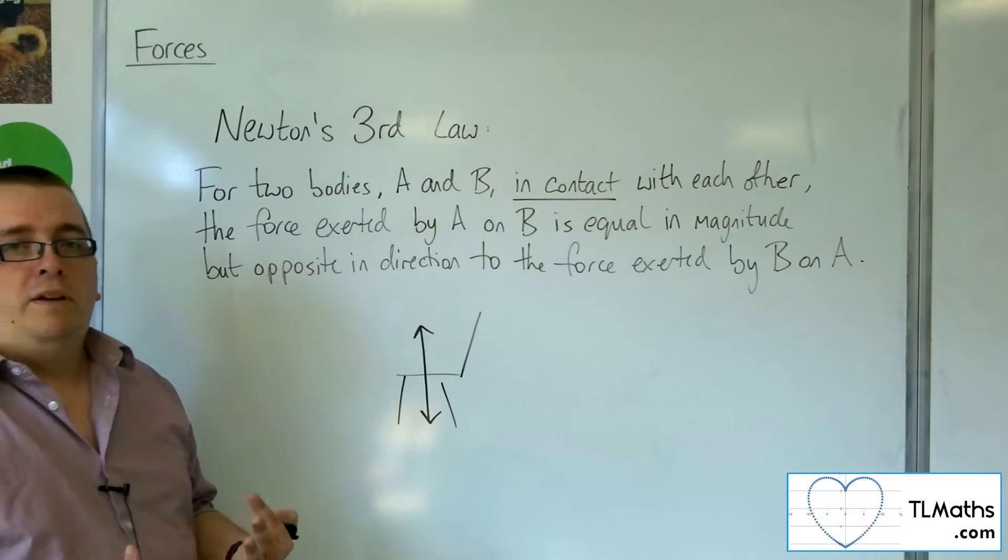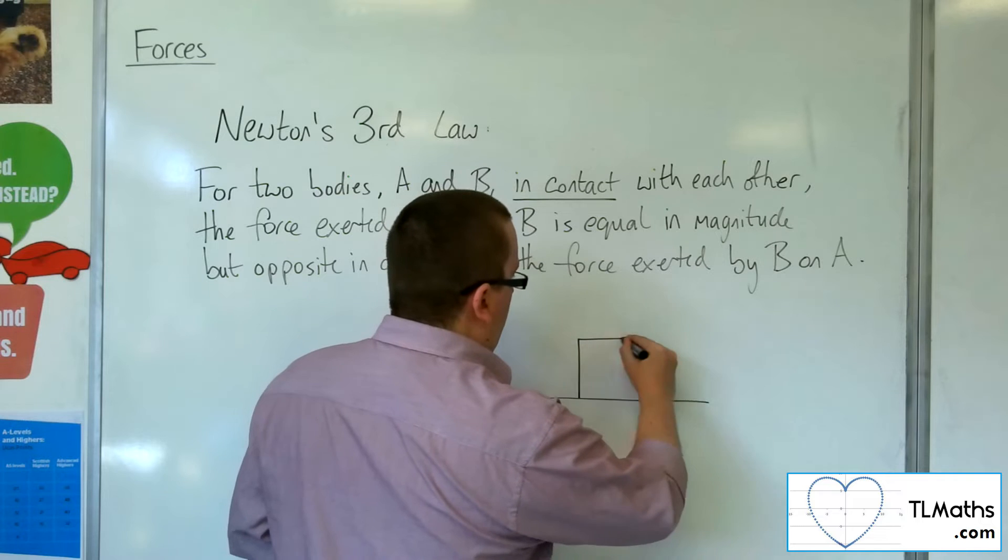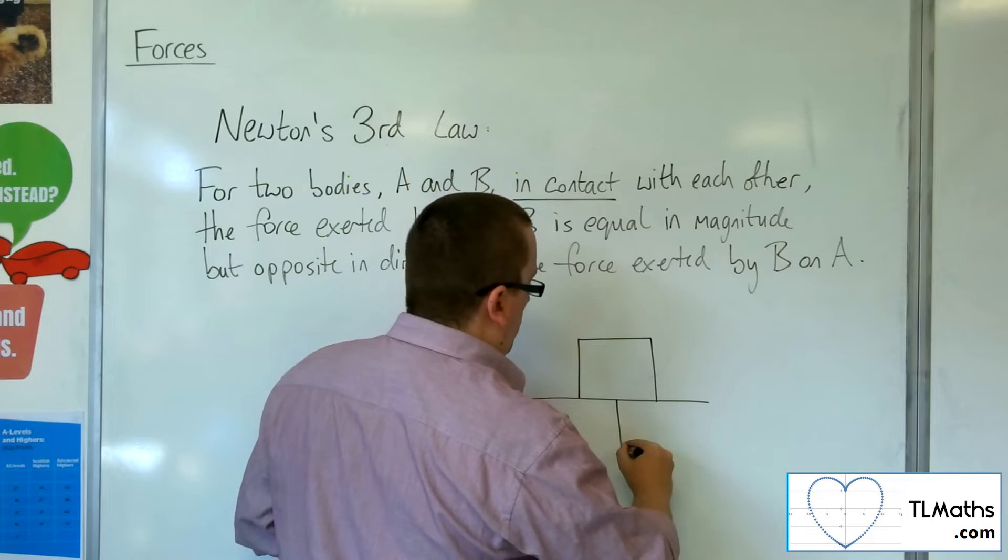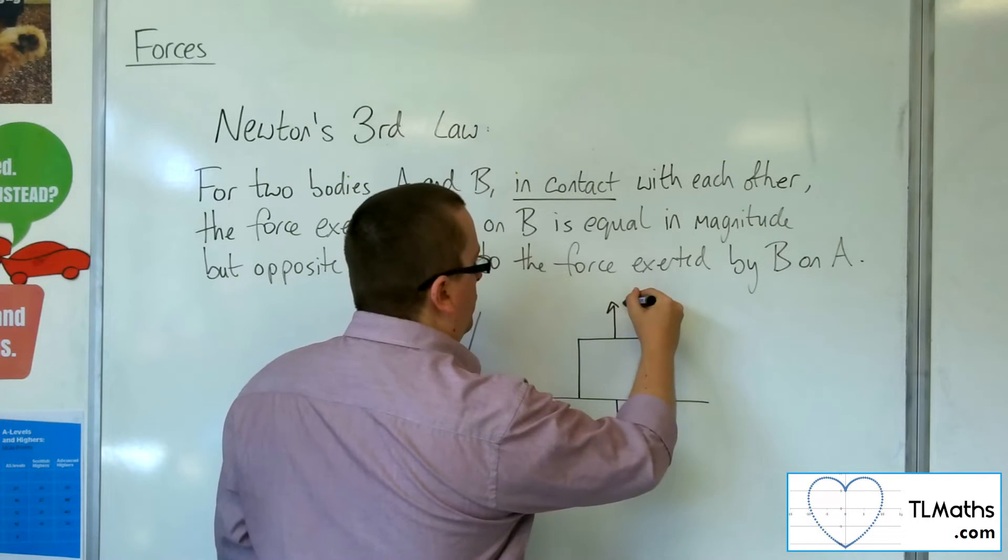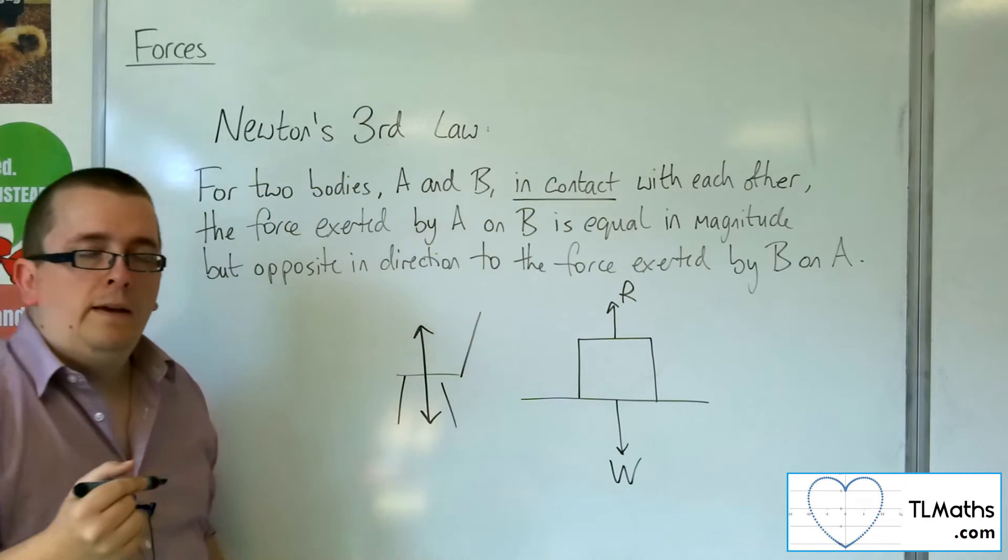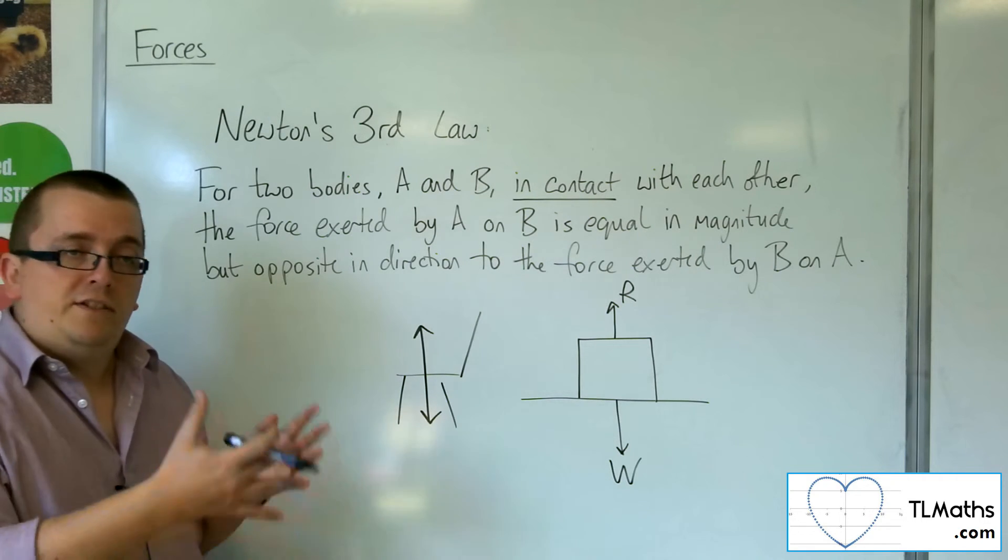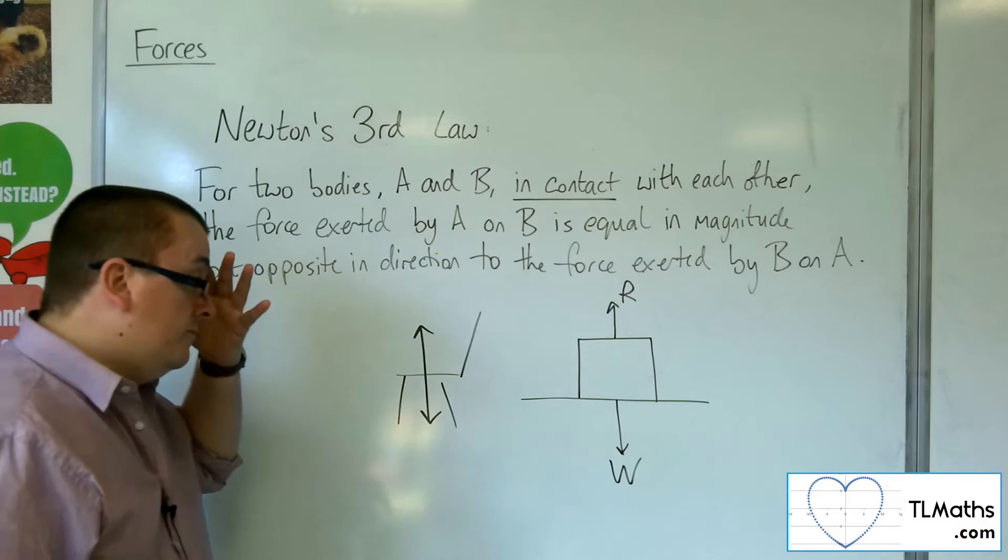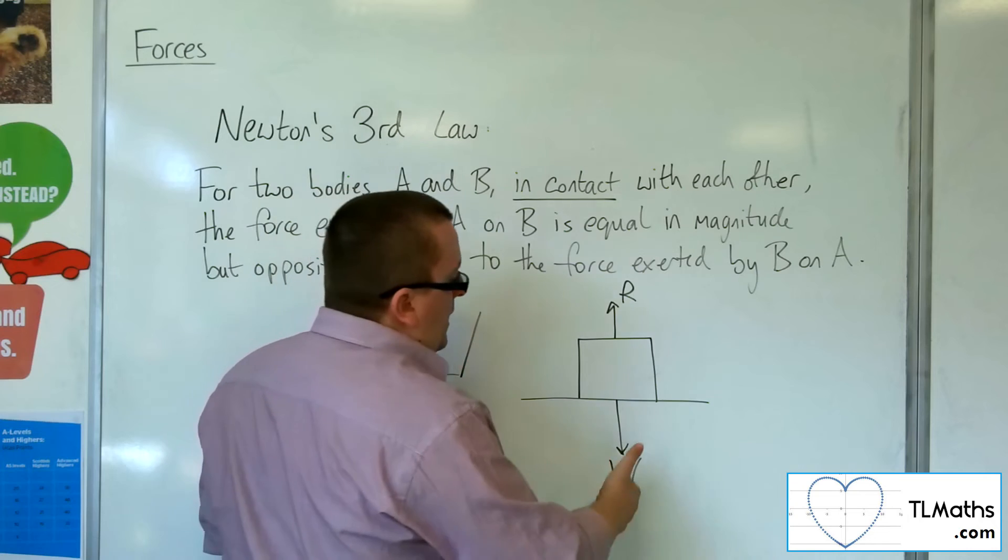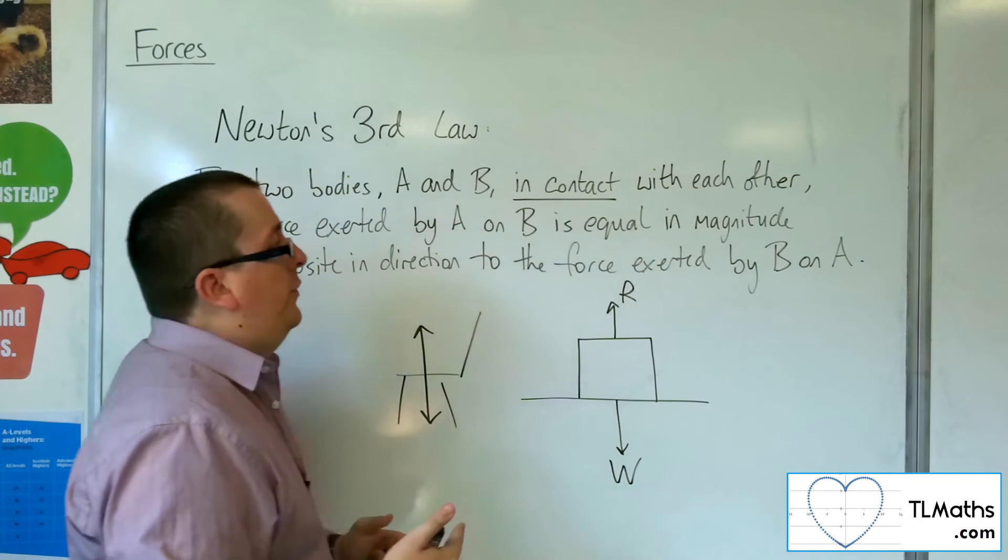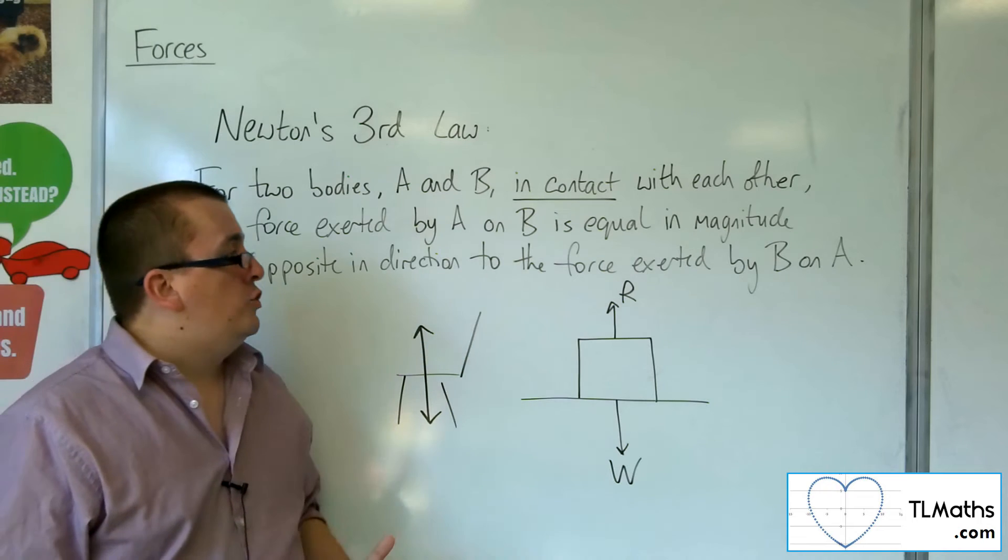We've dealt with this problem before. If we've got a box on a table, there is the weight that works vertically downwards and the normal reaction force working upwards. If the box is static and staying where it is, and it's not accelerating up or down, then the weight and the reaction force will be equal in magnitude but opposite in direction.